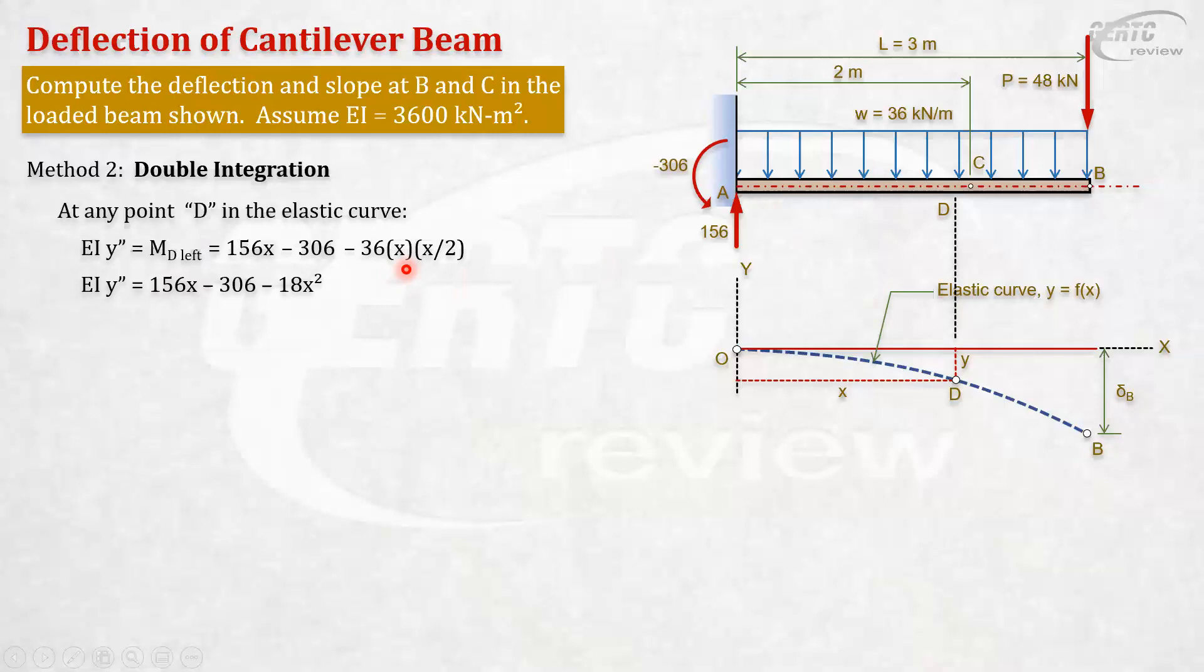What is the moment here? We look at the left. It uses the 156, the 306, and the uniform load. Three loads. First the 156, positive, 156 times x. Next we have the 306, minus that. We're getting the moment. We're looking at the left. So minus 306. And the uniform load, minus 36 times x times x over 2. That's our moment at d. So EI y double prime equals that.